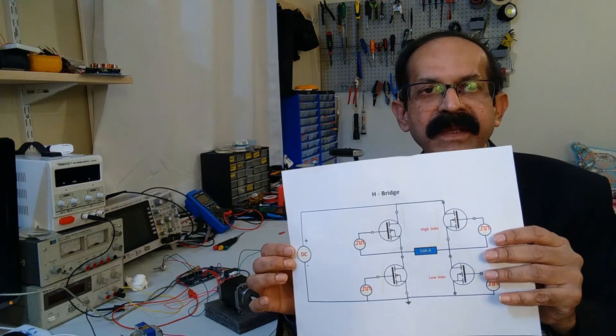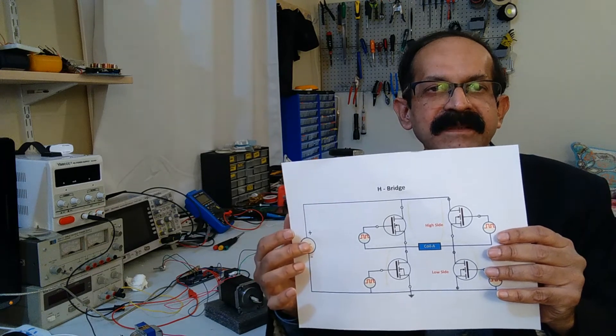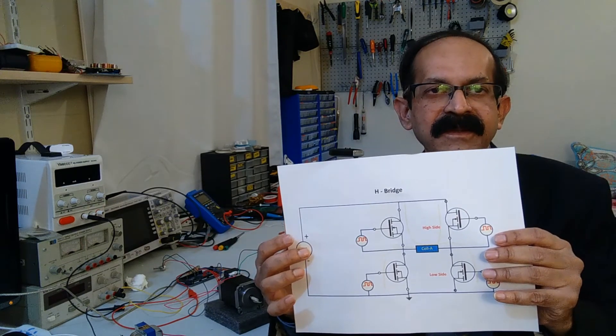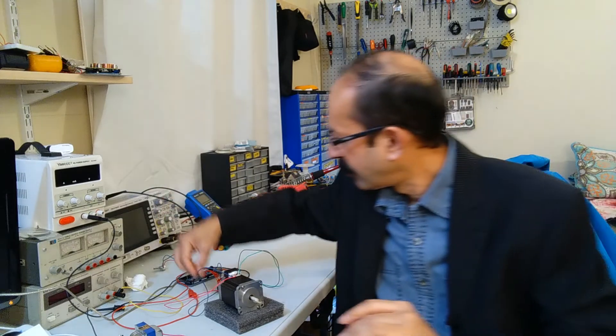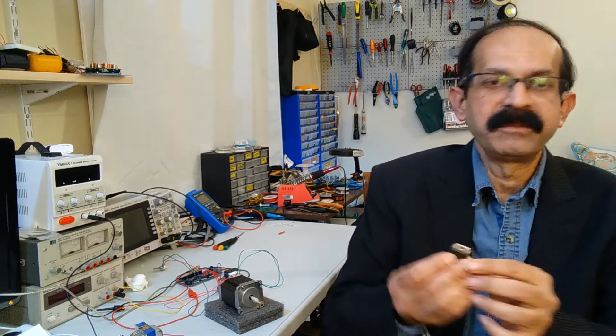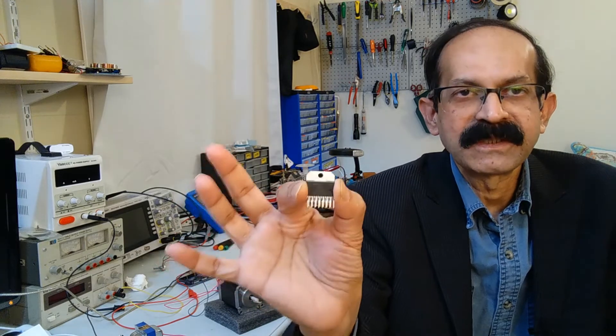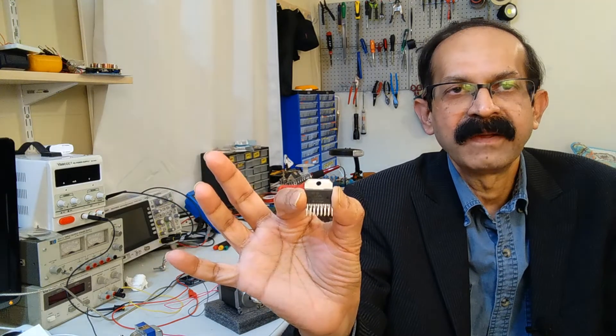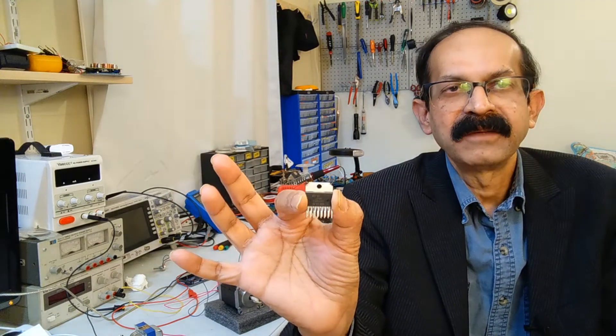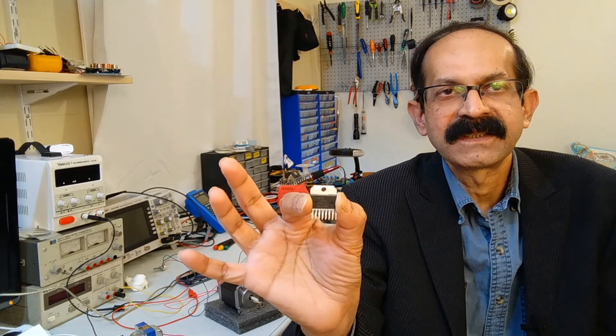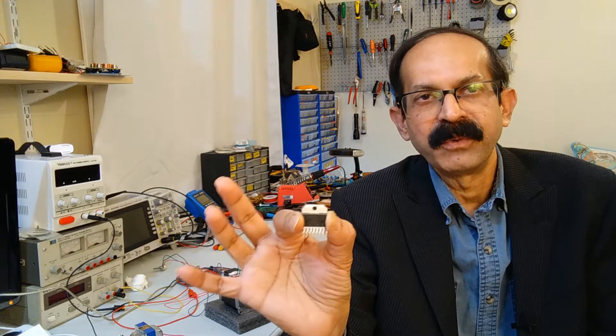So, there are two ways we can use discrete components or an IC. So, this I will show you an IC that is a very popular one. It is called L298. I am going to use this one to drive a stepper motor. And for the pulse trains, input pulses, I will use an Arduino board.